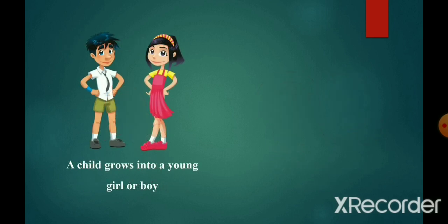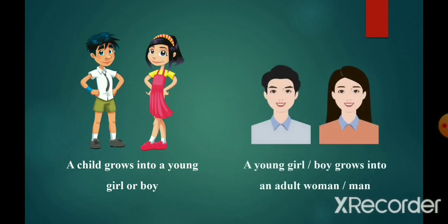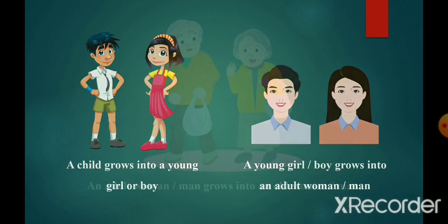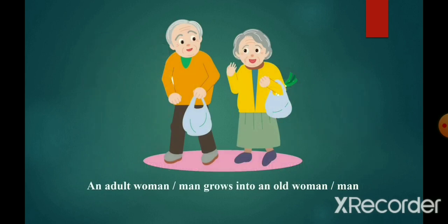A child grows into a young girl or boy. A young girl or boy grows into an adult woman or man. An adult woman or man grows into an old woman or man.